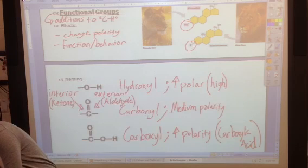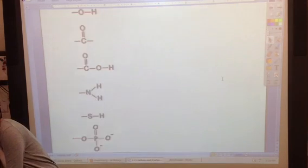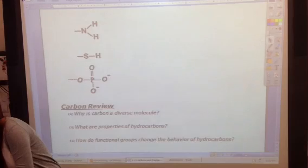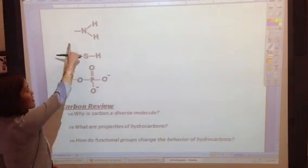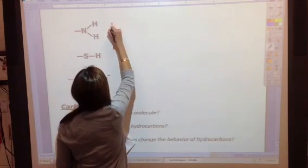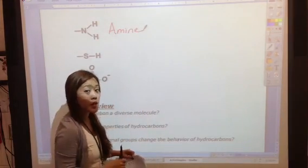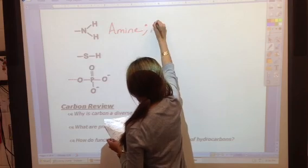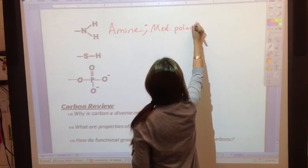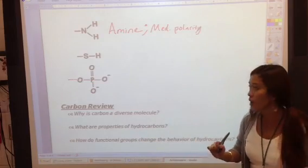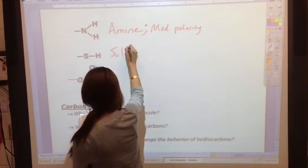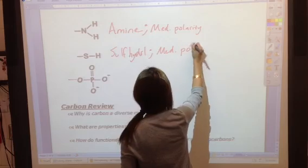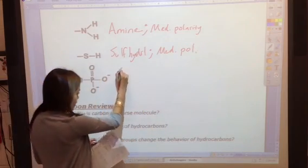There are three more that we need to know of, and that you'll need to be able to identify. The next one has the nitrogen in it. This is going to be our amine group. And that should kind of remind you of an amino acid. So this is a lot of times found in our proteins. And this has a medium level polarity. The next one is sulfhydryl, and again, a medium polarity.